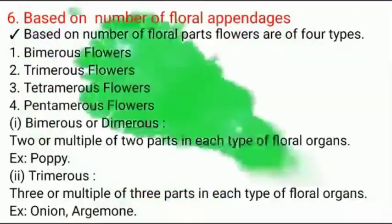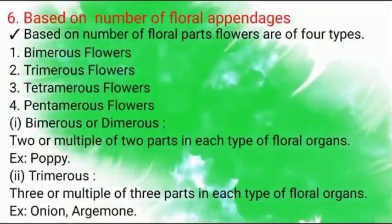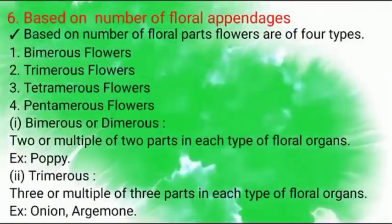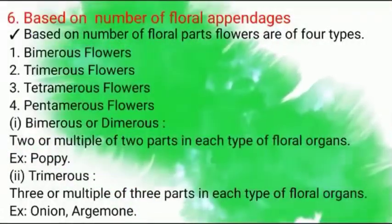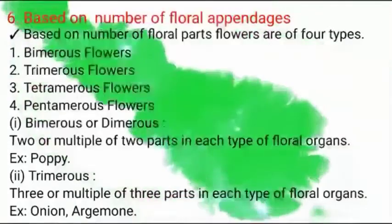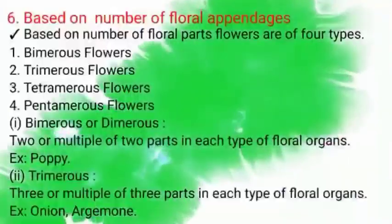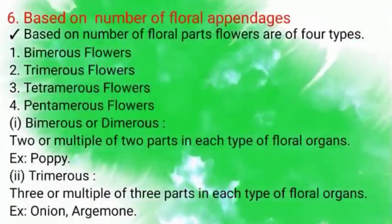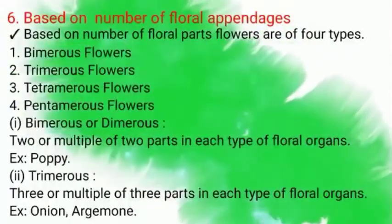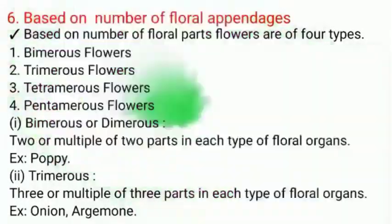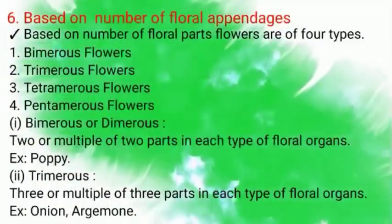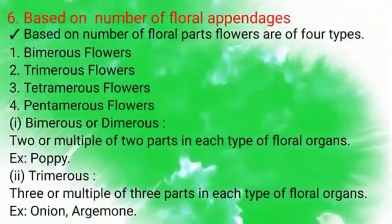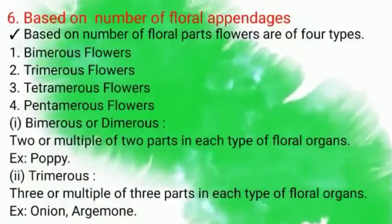Based on Number of Floral Parts or Appendages, flowers are of four types. Number one, Bimerous or Dimerous Flowers — flowers which contain two or a multiple of two floral appendages, example Poppy. Number two, Trimerous Flowers — floral appendages which are three or a multiple of three in number, example Onion and Argemone.